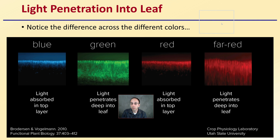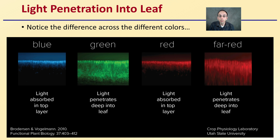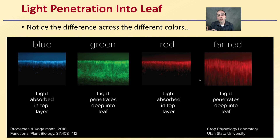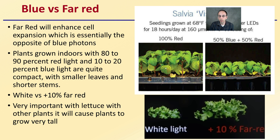Notice the difference across colors in how light penetrates into the leaf. Blue light is absorbed in the top layer. Green light penetrates deep into the leaf. Red is similar to blue, with light absorbed mainly in the top layer. Far red also penetrates deep into the leaf, which is an important consideration when looking at how these wavelengths might be utilized by the plant.